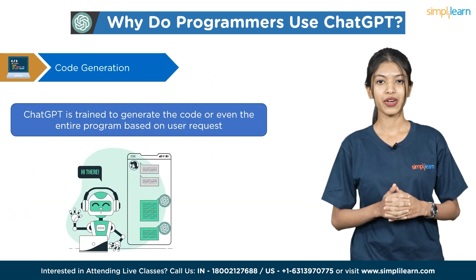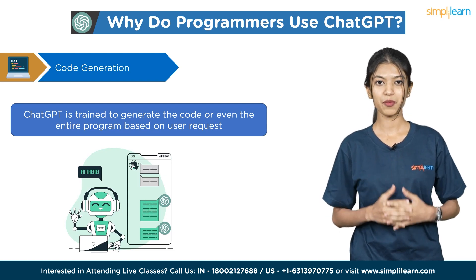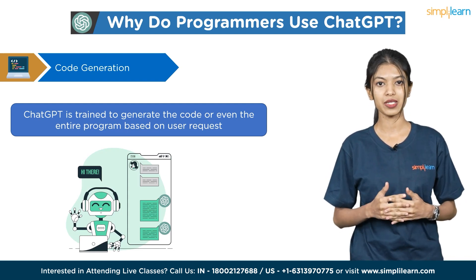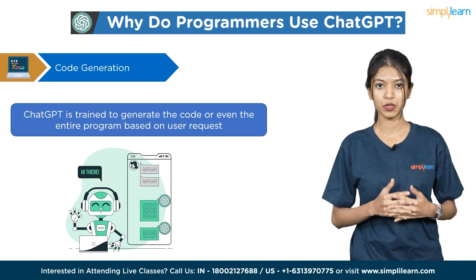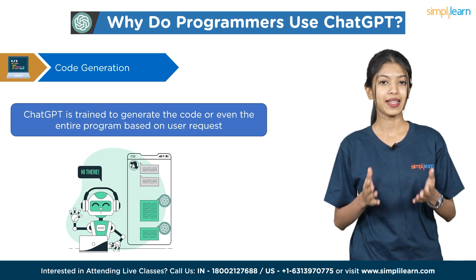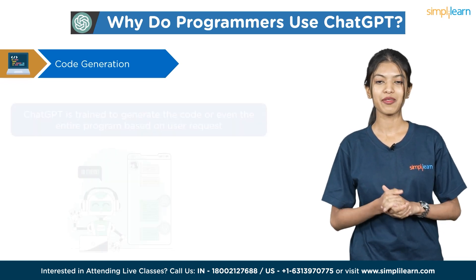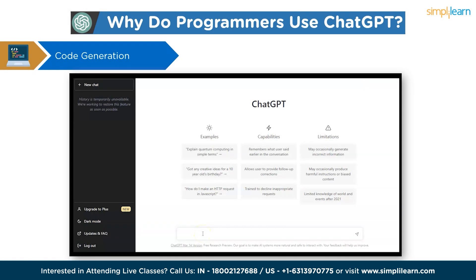ChatGPT is trained to generate code or even entire programs described in natural language — the user specifies what they want the program to do, and ChatGPT generates the relevant code. Let's look at an example of how ChatGPT generates code.